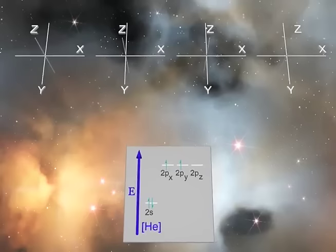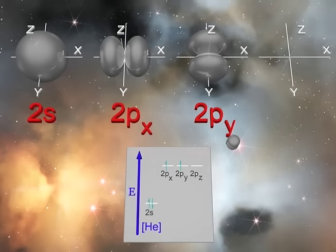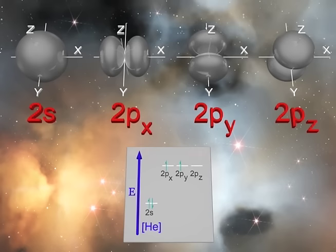Let us first start by examining the shapes of the atomic orbitals for carbon. The 2s atomic orbital is a sphere, and the three 2p atomic orbitals are shaped like dumbbells, oriented along the three axes 2px, 2py, and 2pz. Think of these four atomic orbitals as three-dimensional shapes, where you are most likely to find an electron 90% of the time.